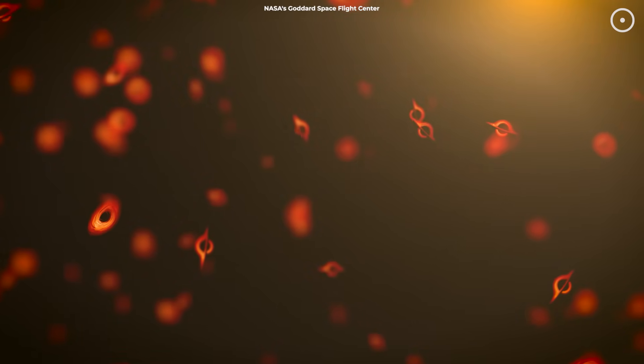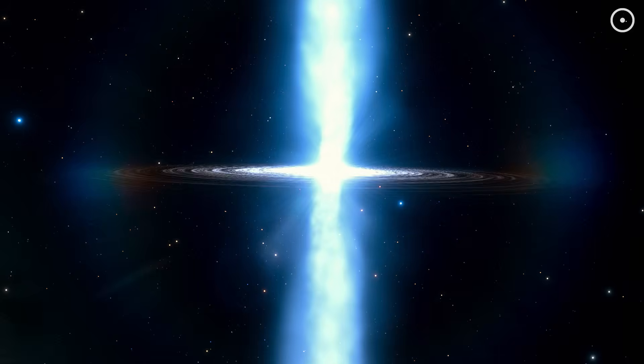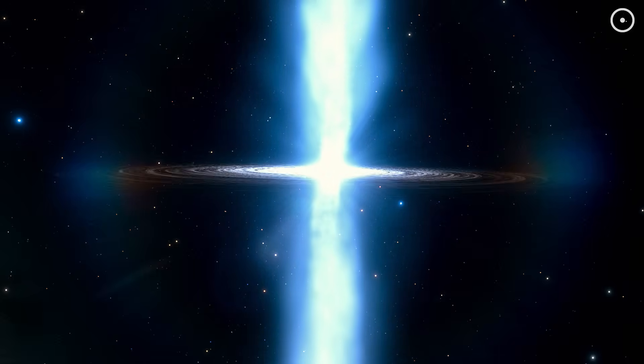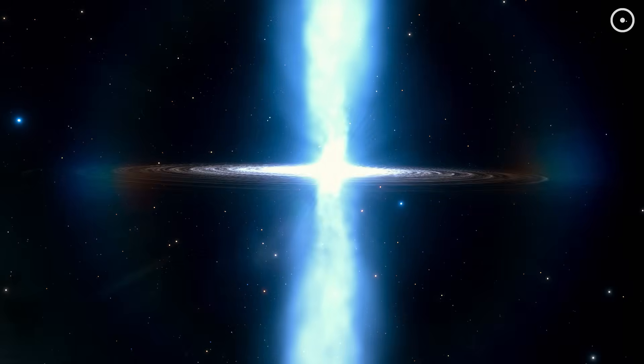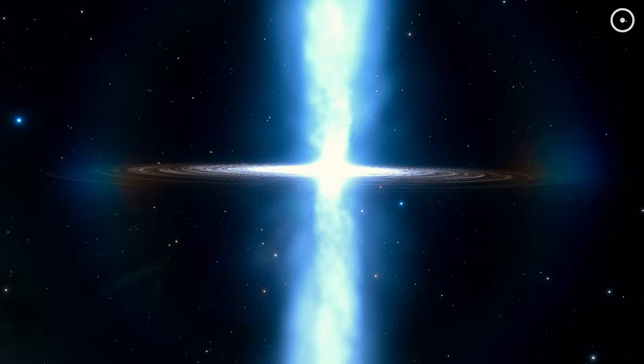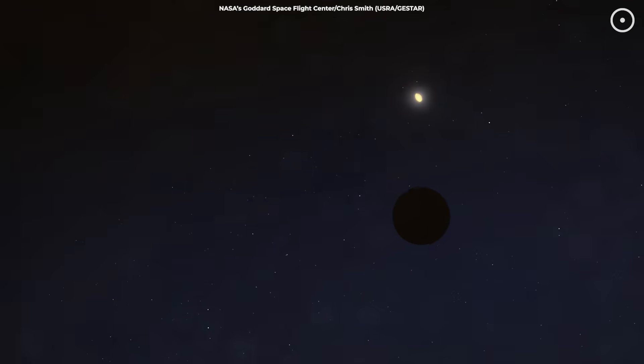But what's more dramatic than slowly evaporating? Black holes launching jets of particles at nearly the speed of light. Some black holes, especially supermassive ones at the centers of galaxies, can eject high-speed jets of particles into space. And these jets aren't just fast, they're blasting out at nearly the speed of light. Here's how it works.